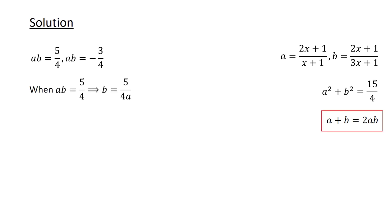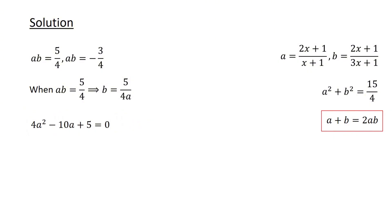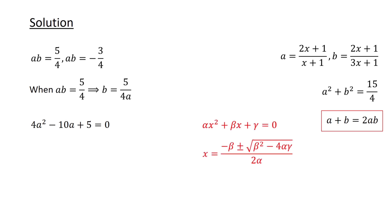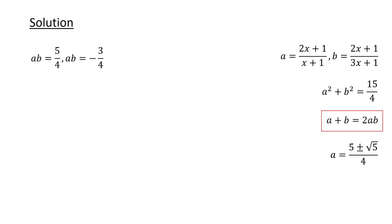Substituting ab equals 5 over 4, so b equals 5 over 4a, into the equation a plus b equals 2ab, we obtain a plus 5 over 4a is equal to 2 times 5 over 4. Multiplying both sides by 4a to clear the denominators and rearranging, we get a quadratic equation. Applying the quadratic formula with alpha equals 4, beta equals minus 10, and gamma equals 5, the solutions are 5 plus root 5 over 4 and 5 minus root 5 over 4.